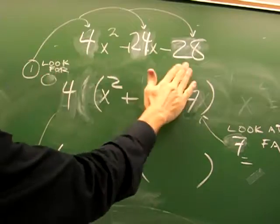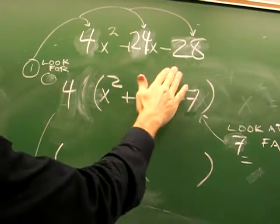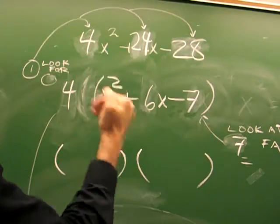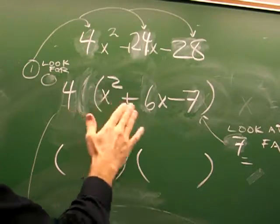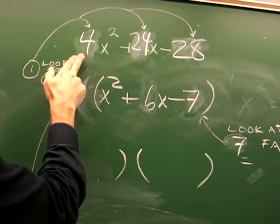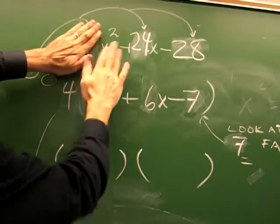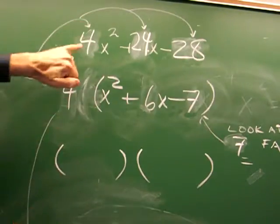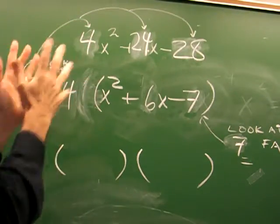If you're given a complicated number like this, there are several stages that you have to go through. Think, wait, this does not look as easy as just an x squared. It's got a 4 in front. This could be very complicated,